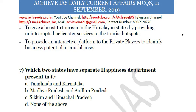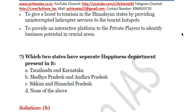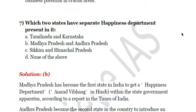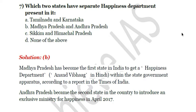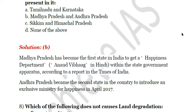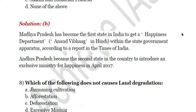Which two states have a separate Happiness Department? A — Tamil Nadu and Karnataka, B — Madhya Pradesh and Andhra Pradesh, C — Sikkim and Himachal Pradesh, D — none of the above. The answer is B. Madhya Pradesh was the first state to establish a Happiness Department, known as Anand Vibhag in Hindi, within the state government apparatus. Andhra Pradesh has become the second state in the country to introduce an exclusive ministry for this purpose.